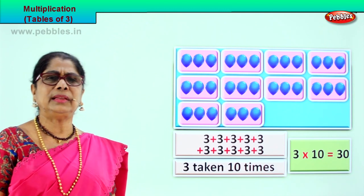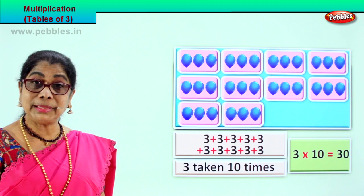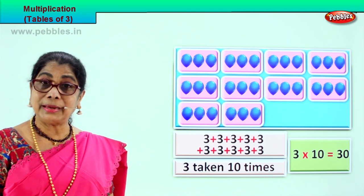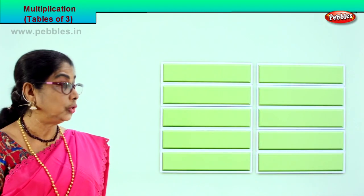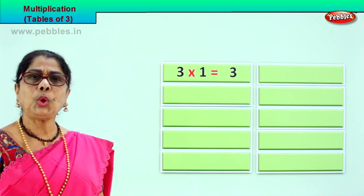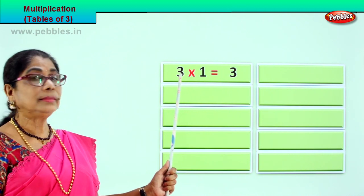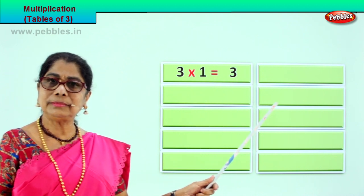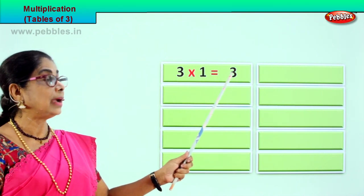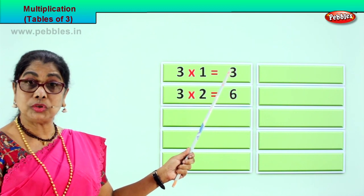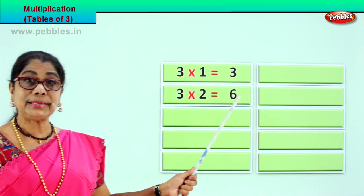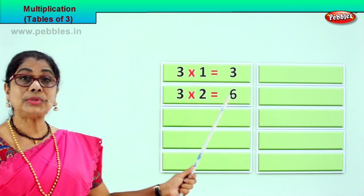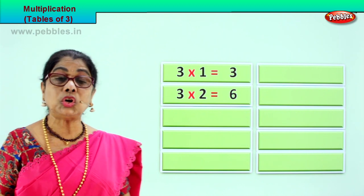You have to repeat this many times to remember the table. Now let's repeat the three times tables together. Shall we? Good. Look what we have here. What's the first one? Three into one is three. Three ones are three. Repeat after me: three ones are three. Good. Next: three into two is six. Three twos are six.